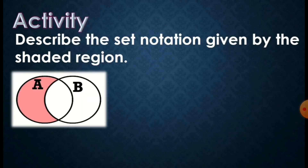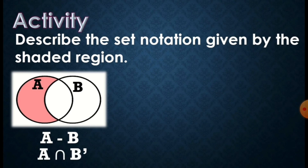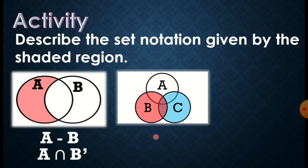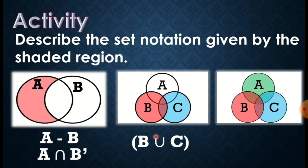Next, so the shaded part is only set A — tinatanggal yung lahat ng elements ni set B. So this is the difference of set A and B. Then, pwede rin the intersection of A and complement B. So when you say complement B, yung wala sa set B. Kapag dalawang sets are shaded — set B and set C — at hindi kasali yung set A, so this is the union of set B and set C. If tatlong sets are shaded — set A, set B, and set C — so that is the union of set A, set B, and set C. Lahat are shaded.